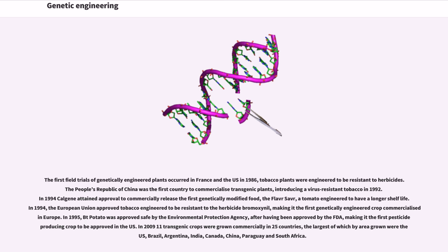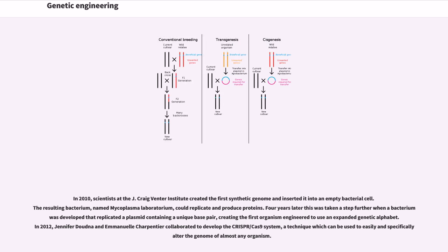In 2010, scientists at the J. Craig Venter Institute created the first synthetic genome and inserted it into an empty bacterial cell. The resulting bacterium, named Mycoplasma laboratorium, could replicate and produce proteins. Four years later, a bacterium was developed that replicated a plasmid containing a unique base pair, creating the first organism engineered to use an expanded genetic alphabet. In 2012, Jennifer Doudna and Emmanuelle Charpentier collaborated to develop the CRISPR-Cas9 system, a technique which can be used to easily and specifically alter the genome of almost any organism.